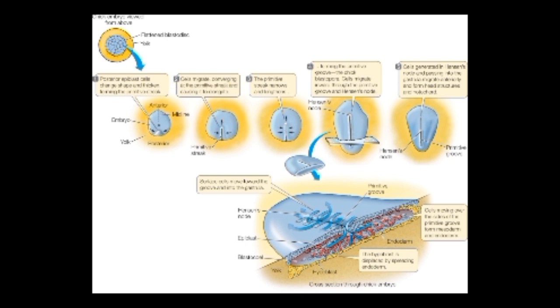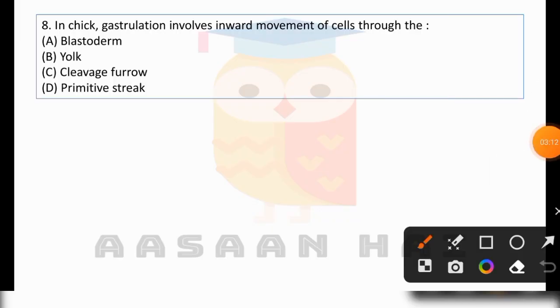These cells convert into the primitive streak causing elongation. Cell migration occurs inward through this structure. This is how the primitive streak is formed in chick embryos.